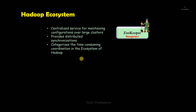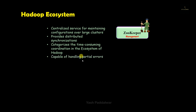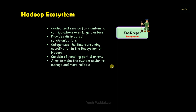If an error occurs inside the system, Zookeeper is capable of handling partial errors, making it fault tolerant. It aims to make the system easier and more reliable due to all these features it provides across all components inside the Hadoop ecosystem.